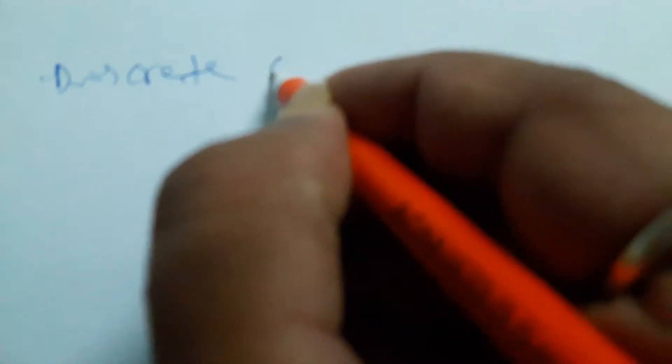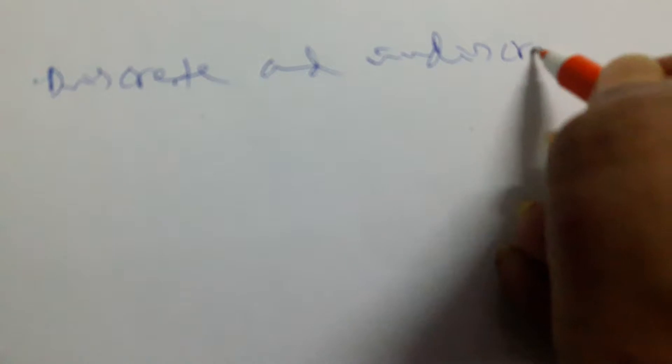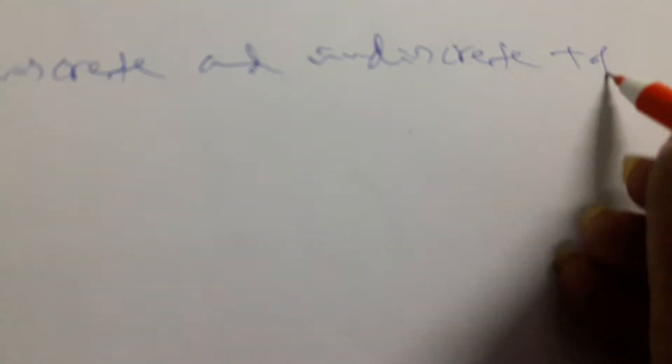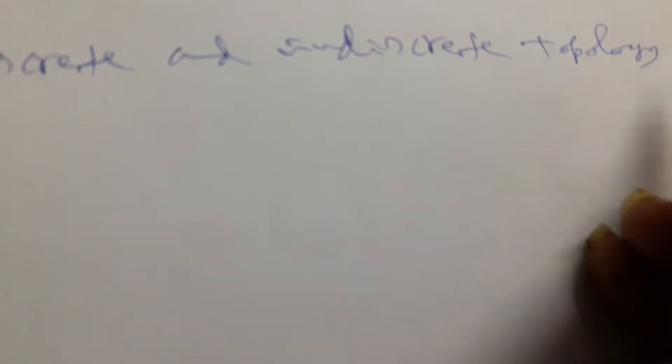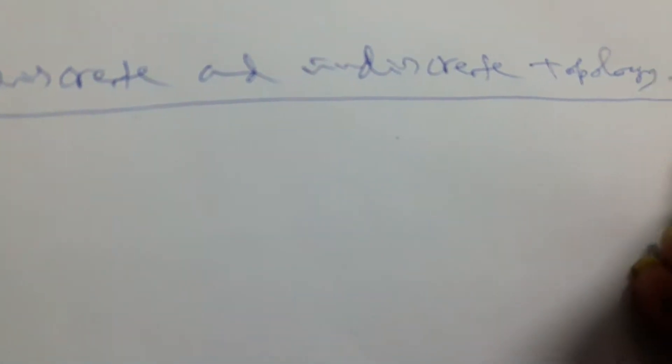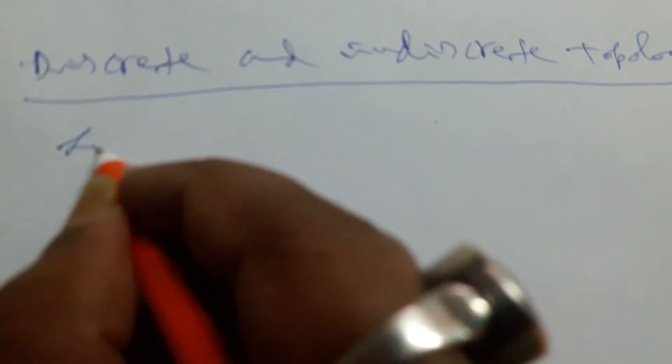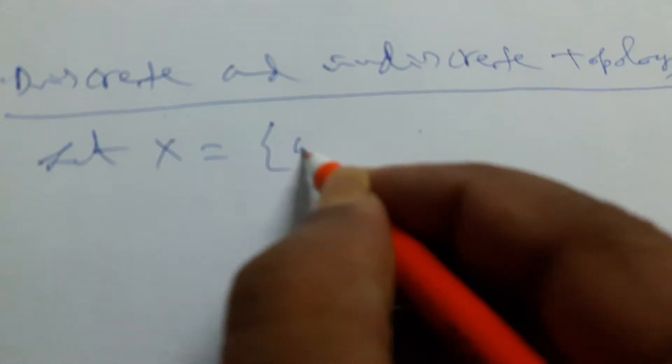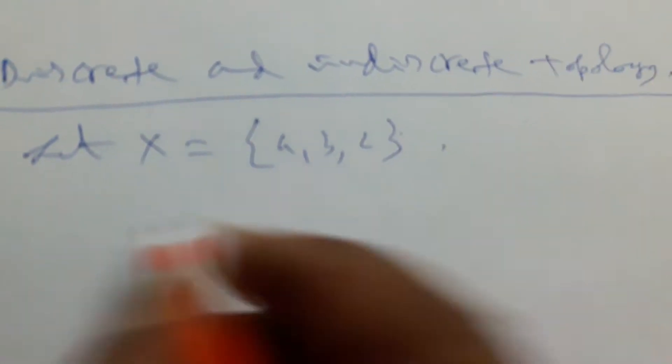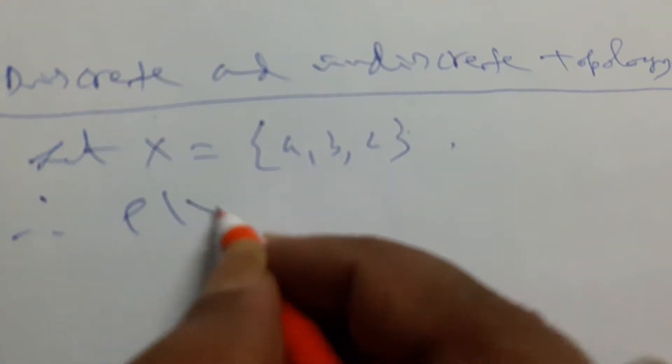Welcome to the viewers. Now we discuss discrete and indiscrete topology. Let us consider X, a set containing three points. Therefore ρ(X)